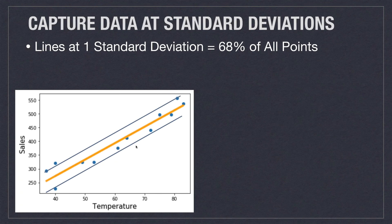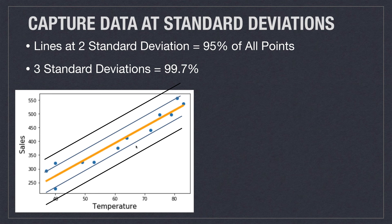We could then add and subtract 28.86 to create two more lines that will capture 68% of all values. We could even go further and add another line on the top and bottom to capture 95% of all possible points. Now I want to jump over to code and show you exactly how to make this calculation.